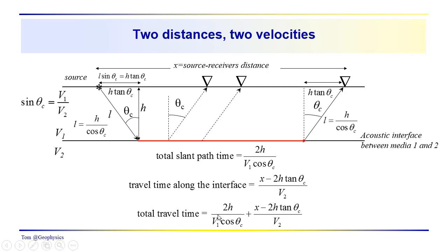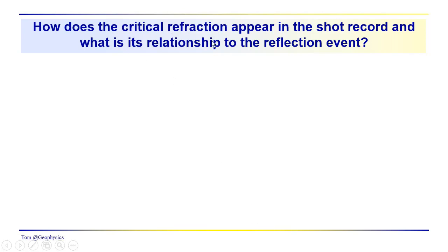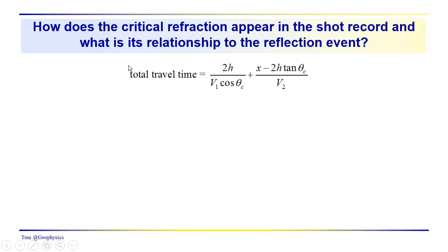Adding the two components together, the total travel time is: 2h over (V1 cosine theta critical) plus (x minus 2h tangent theta critical) over V2. This gives us the relationship of travel time versus distance in terms of layer thickness h, the two velocities V1 and V2, and the critical angle.